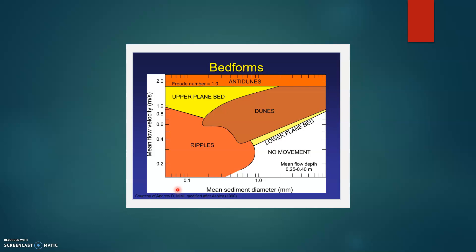This is a graph of bed forms which indicates different bed forms that are formed and this can be described based on sediment diameter and mean flow velocity.